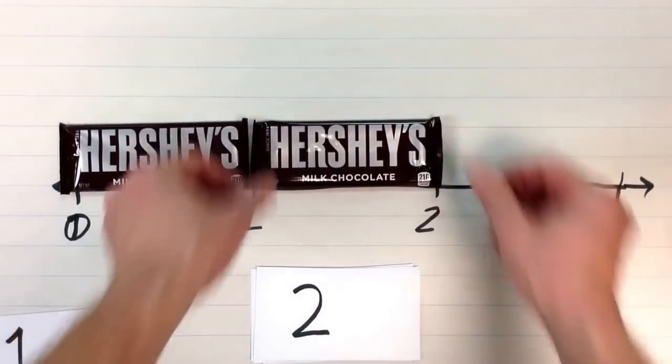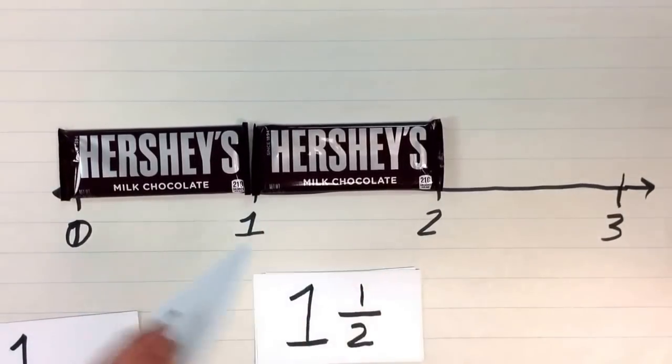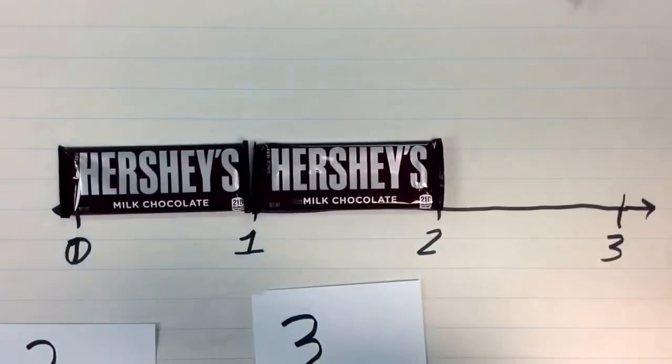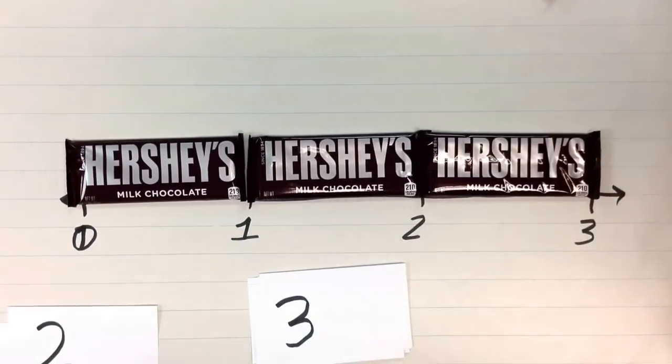And if we were going to represent three delicious Hershey's candy bars, we would represent that with three Hershey's candy bars. So far, so good. One, two, three. That's something you learned in kindergarten.